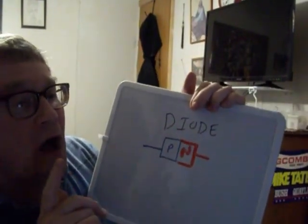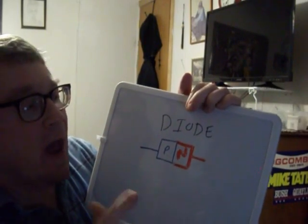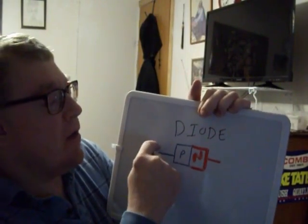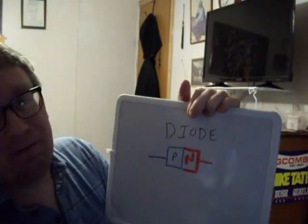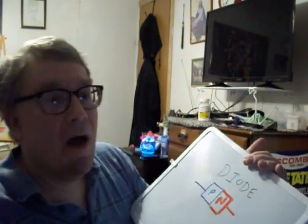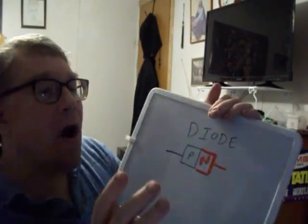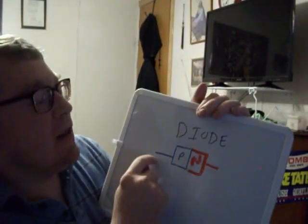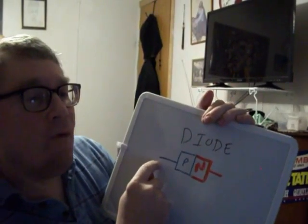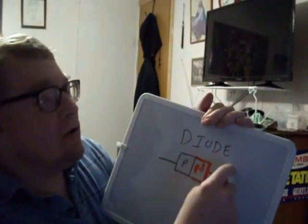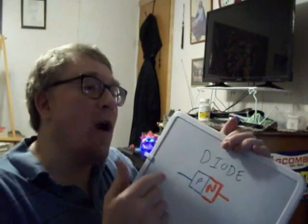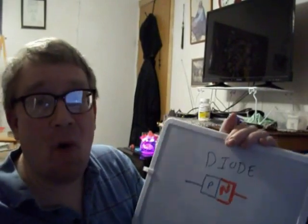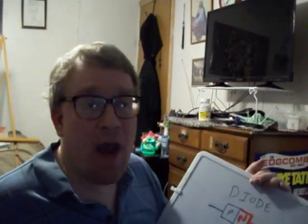Current runs in a direction opposite of electrons. So let's say the electrons are running from here to here. Because the cathode is here, the electrons are running this way. The current flows from the anode to the cathode, but before it does, it actually hits whatever needs to be electrified — like your circuit board, a light bulb, or whatever you have.